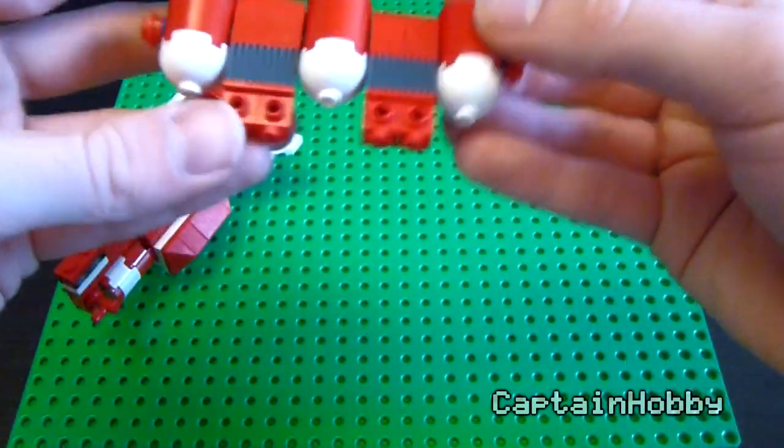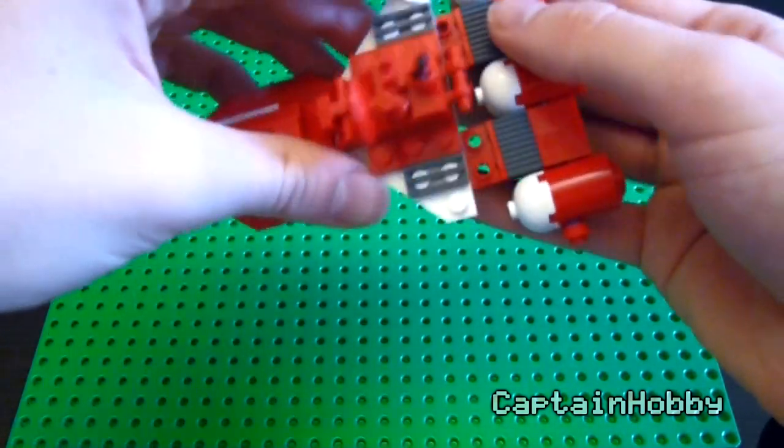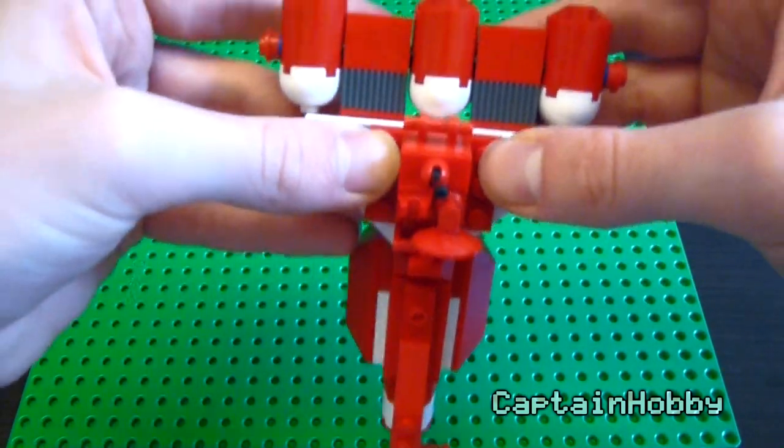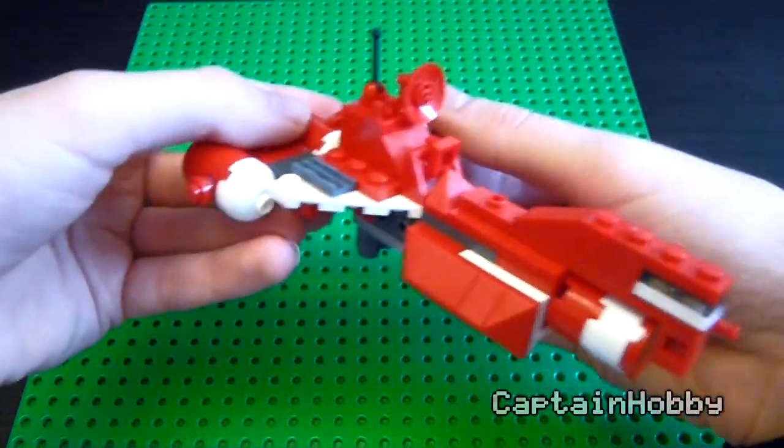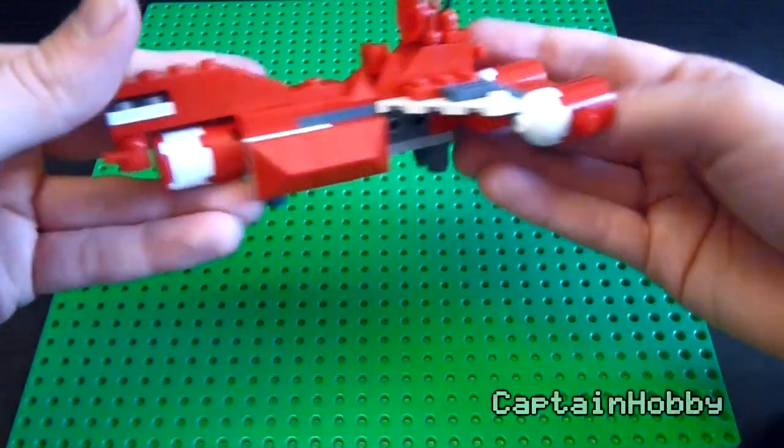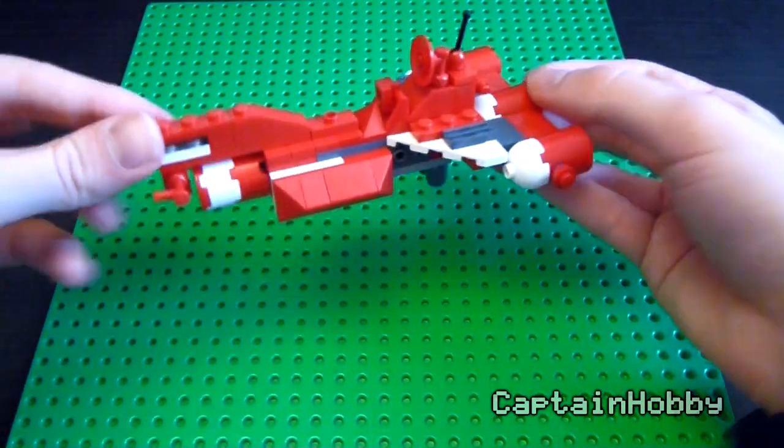And then, finally, this other one on the side. And this goes on the underside here. It should be pretty easy to see where it clicks into place. And there we have it. The Consular Class Cruiser from Episode 1 is complete.